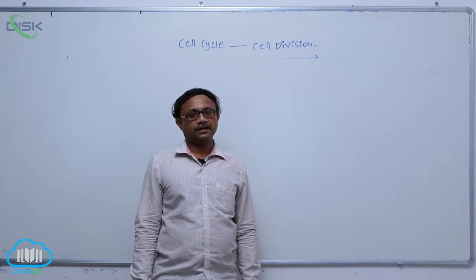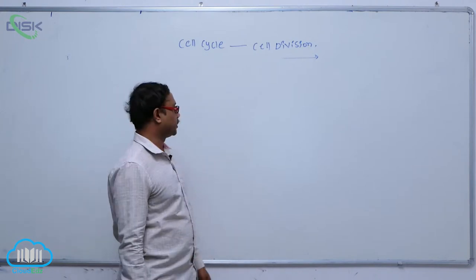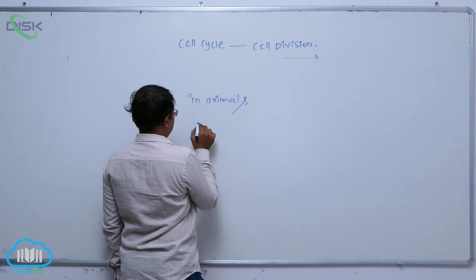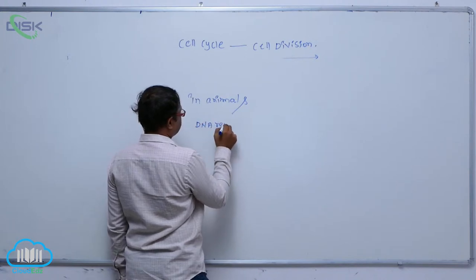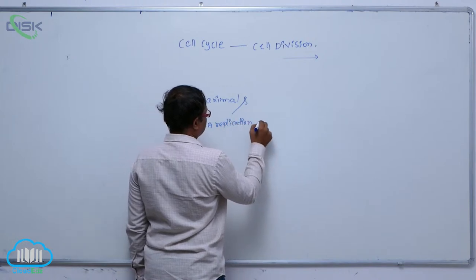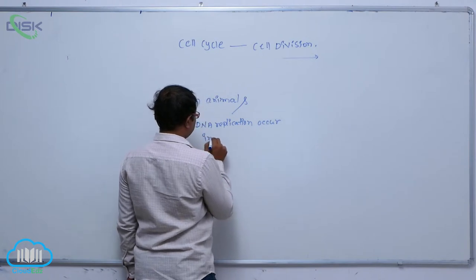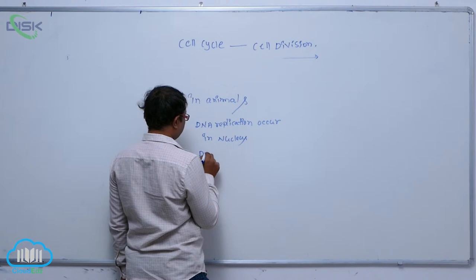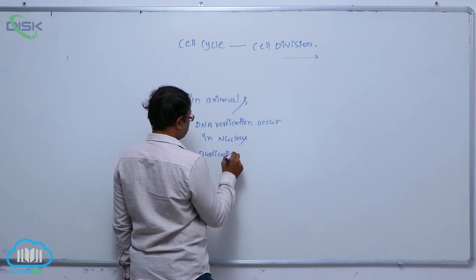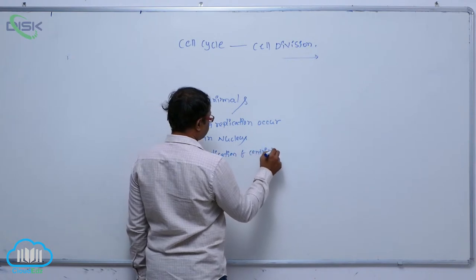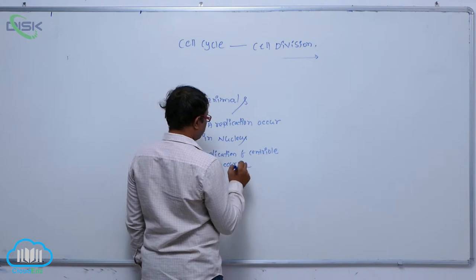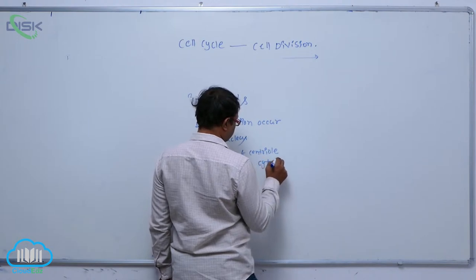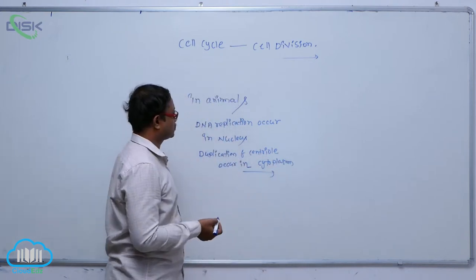In animals, DNA replication occurs in the nucleus, and centrioles are duplicated in the cytoplasm. That is an important point regarding animals.